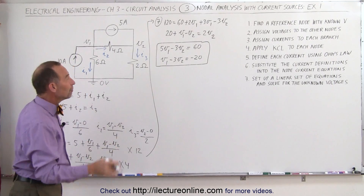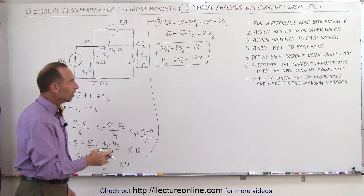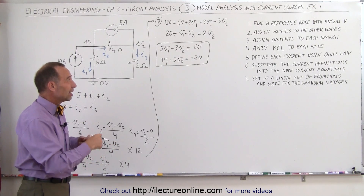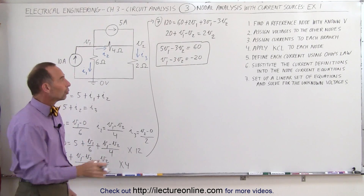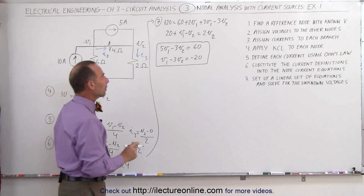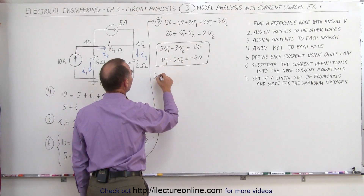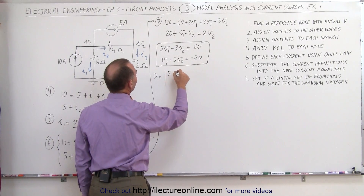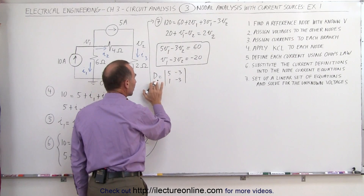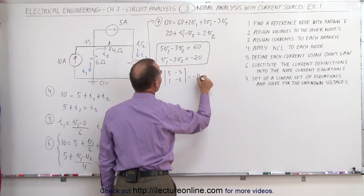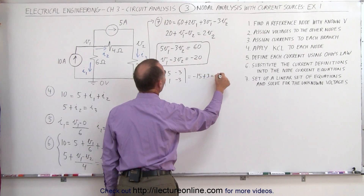We'll use Cramer's rule and determinants to solve this. We take the coefficients of V1 and V2 and put them in a matrix D equal to [5, -3; 1, -3]. The determinant is the product of the diagonals: (5)(−3) minus (1)(−3), which gives minus 15 plus 3, equal to minus 12.